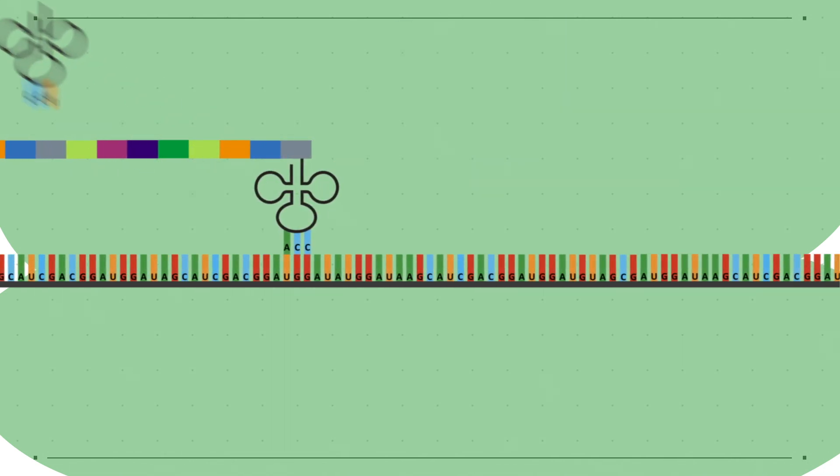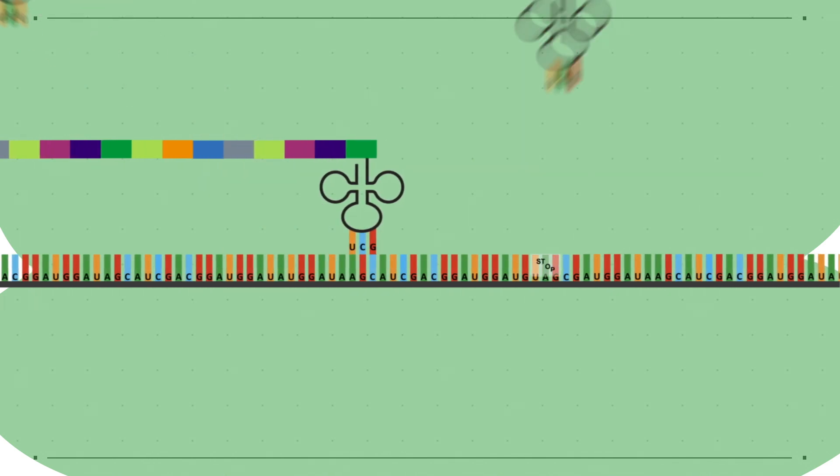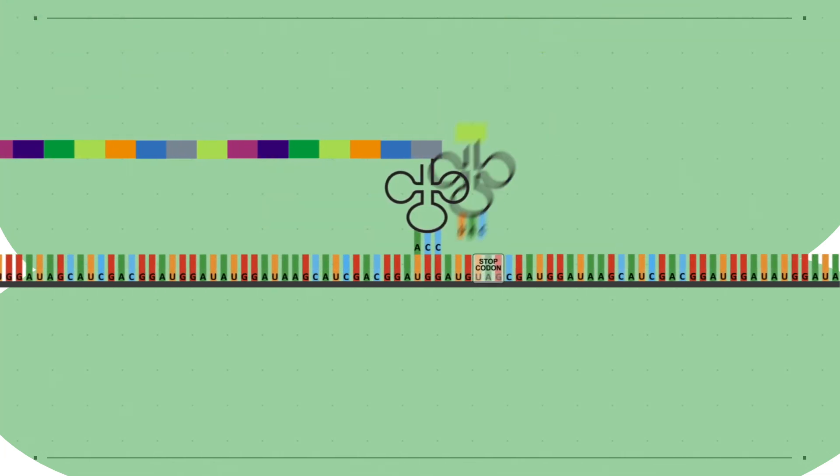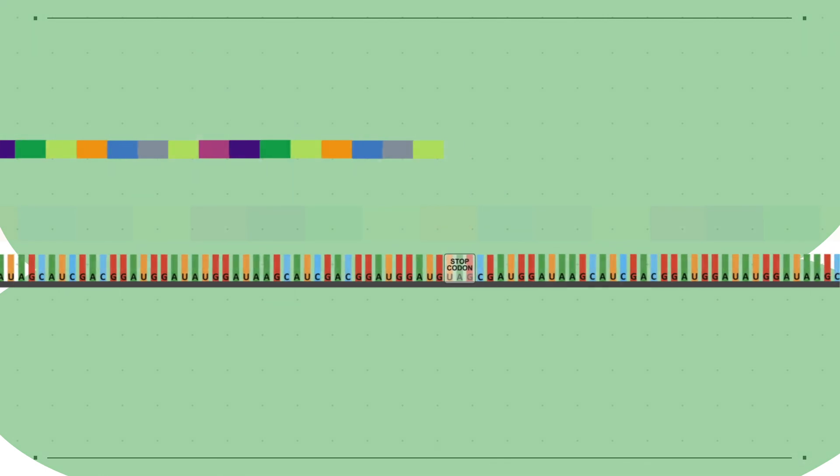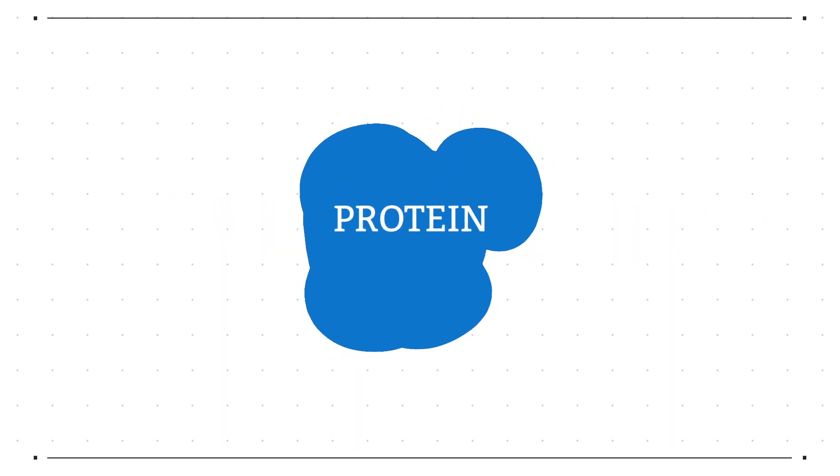Eventually the ribosome will reach a codon that has no corresponding amino acid. This is known as the stop or termination codon and marks the end of translation. Finally the polypeptide chain is folded and modified to give its final structure and become a protein.